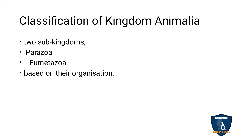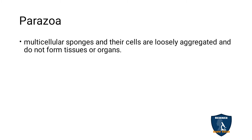Based on their organization, the animal kingdom is divided into two sub-kingdoms: Parazoa and Eumetazoa. Parazoa means multicellular organisms — specifically the sponges. Sponges are multicellular but loosely formed; they don't form any tissues or organ system. That type is called Parazoa.